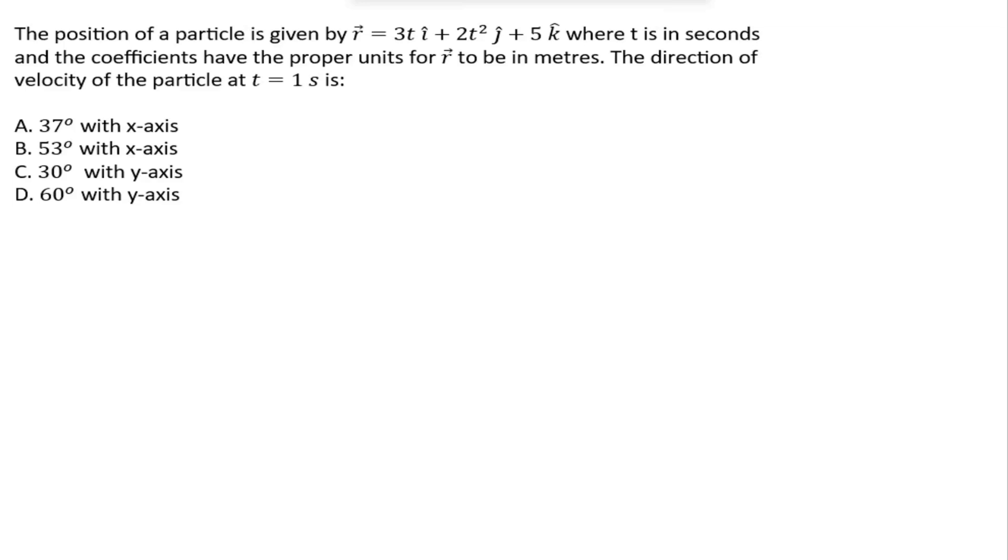Hello everyone, let's understand this question. The position of a particle is given by r vector equals 3ti cap plus 2t squared j cap plus 5k cap, where t is in seconds and the coefficients have the proper units for r to be in meters. The direction of velocity of the particle at t equals 1 second is: